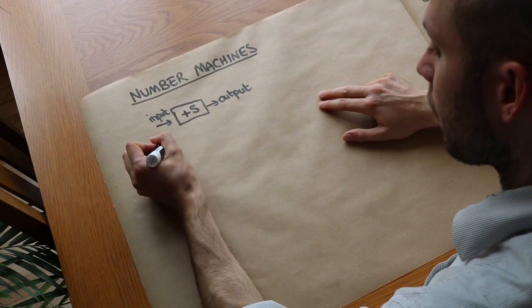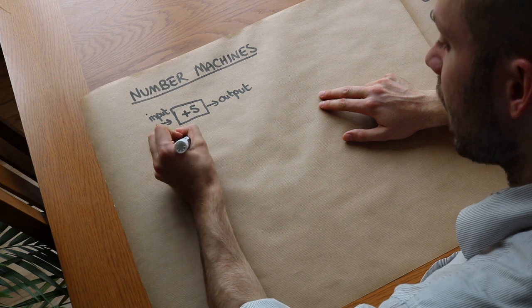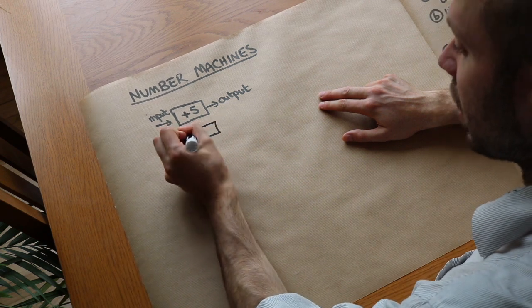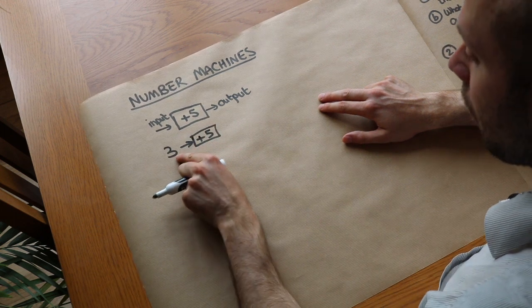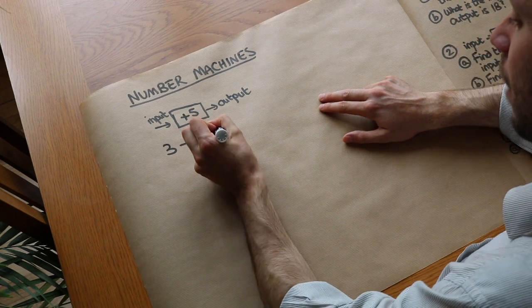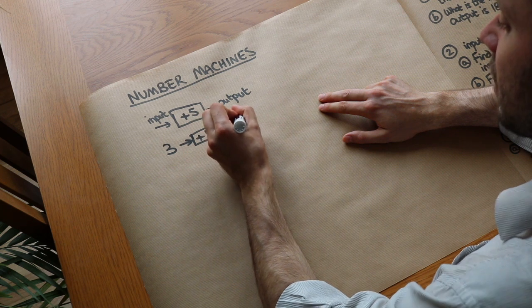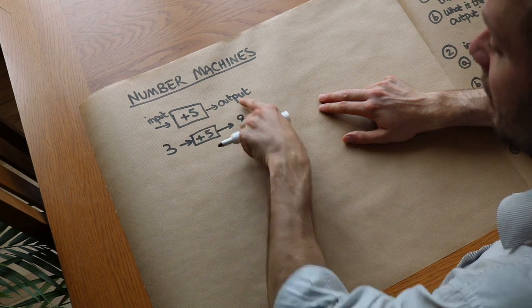So for example, if the input was 3 and I input that into a number machine which adds 5, then it takes the input of 3, it adds 5 to it, and what's 3 plus 5? Well it's 8, so it would spit out 8 as the output.